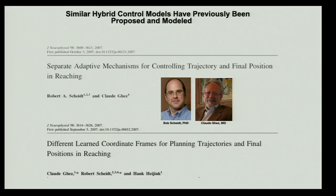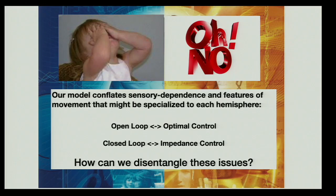Bob Scheidt and my mentor Claude Guest did work showing separate mechanisms for controlling impedance and something like optimal control through learning studies. Could it all be as simple as feedforward versus feedback control? Impedance control probably uses reflexes — modulated stretch reflexes. That's a whole theory called equilibrium point control. How can we disentangle this? We used human deafferentation. There have been four patients described in the scientific literature with large-fiber sensory neuropathies — 1A and 2 fibers die due to a viral episode.